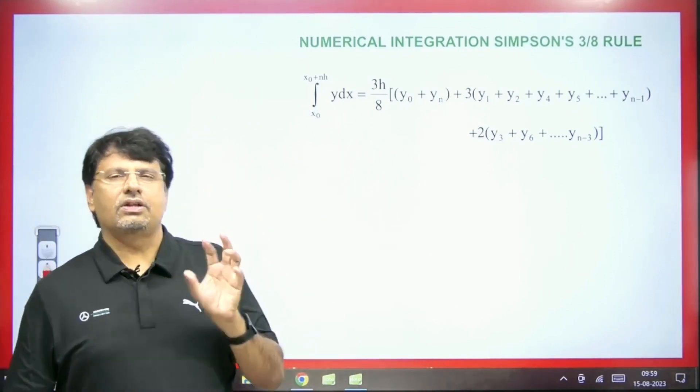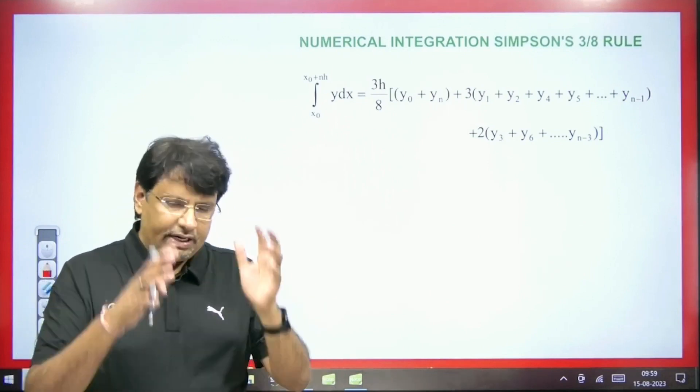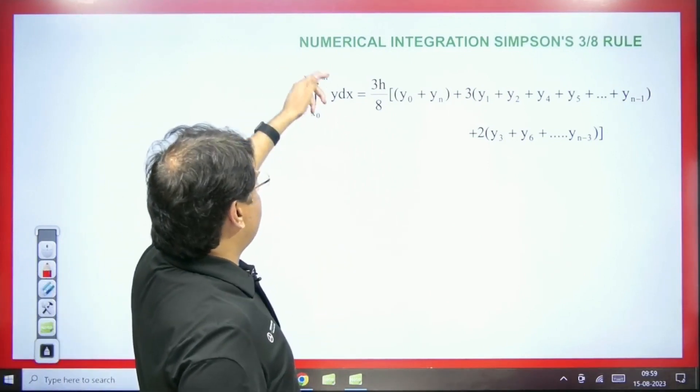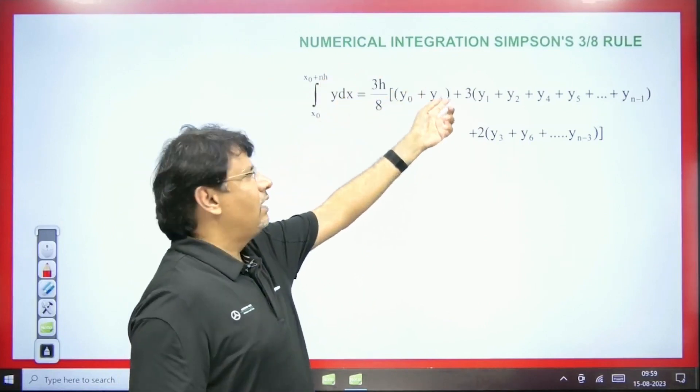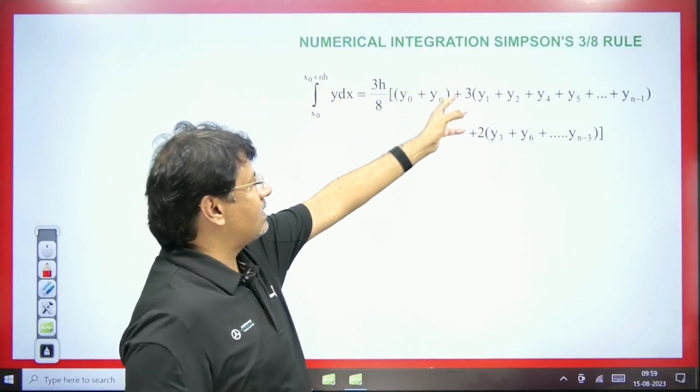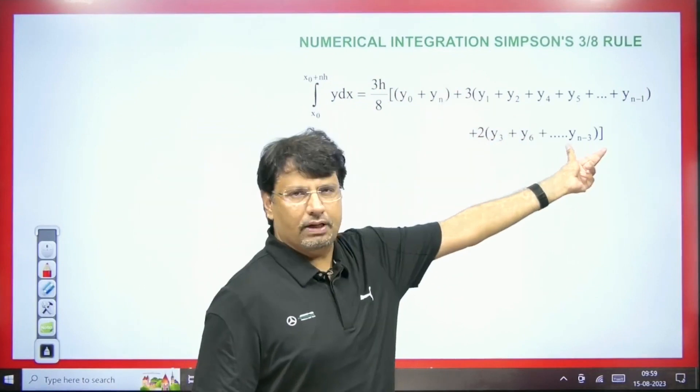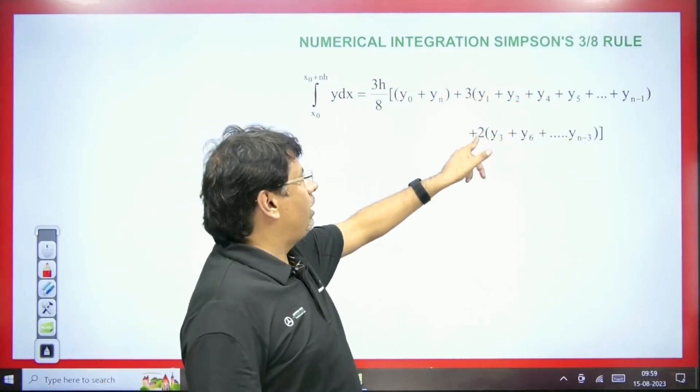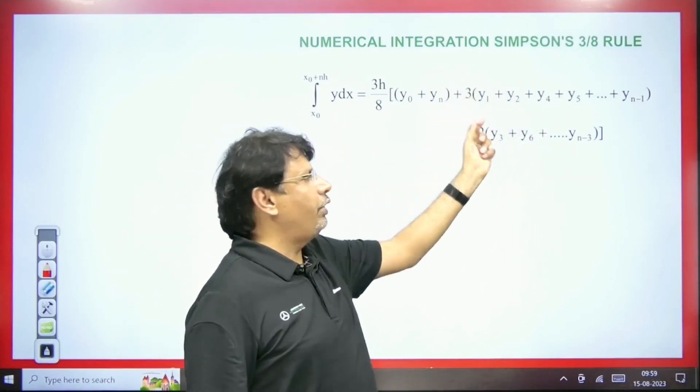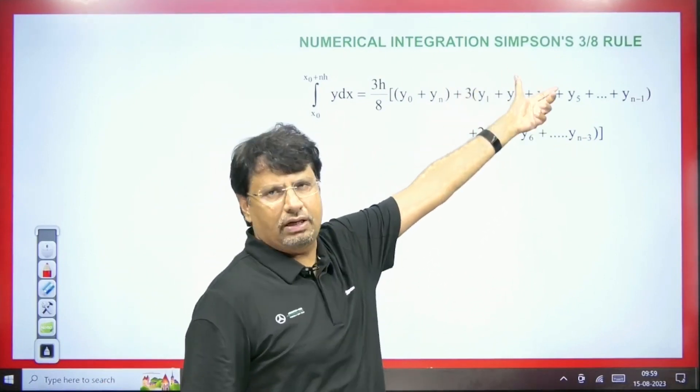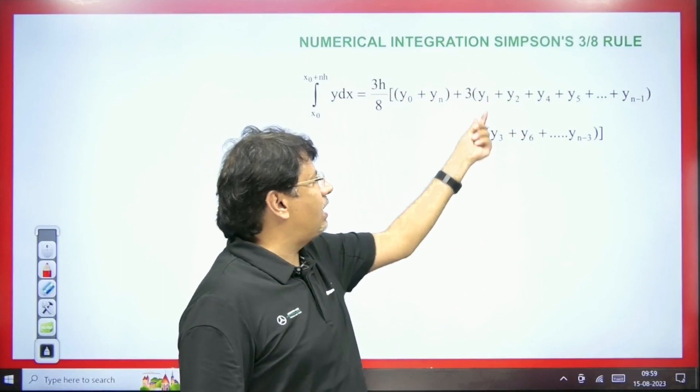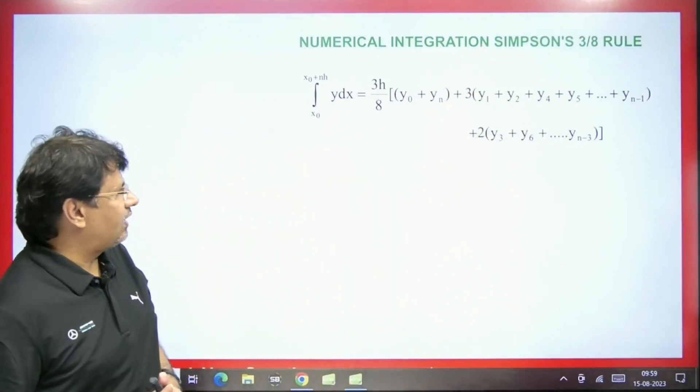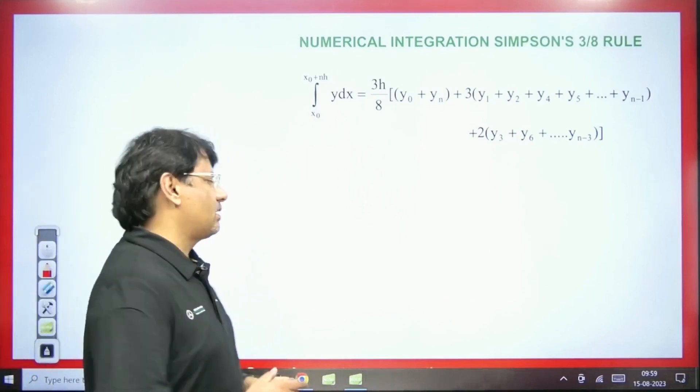If we have to integrate any function or integrate the data using the Simpson's 3x8 rule, so what will we do here? x0 to x0 plus nh ydx is equal to 3h by 8. First term plus last term, 3 into here we have this term and it is multiple of 2 into 3 and remaining terms goes here. What happens in Simpson's 1 third is that 2 into even term and 4 into odd term, which means that 2 into multiple of 2 and the remaining terms come here. Multiple of 3 into 2 will come here. The remaining term will come here and 3 will come here. This is something that needs to be memorized. I will take an example and through it I will try to explain them.